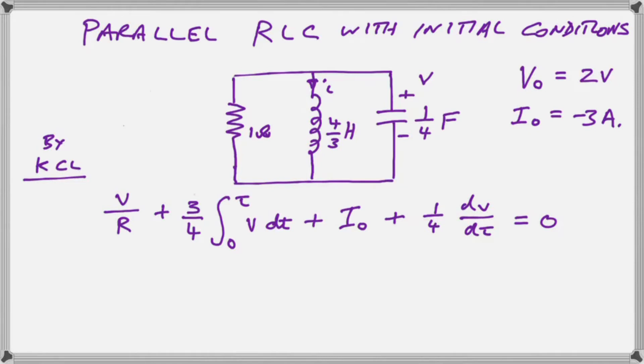So these are currents, these three terms that you see here are currents. That's the current through the resistor. This here is the current through the coil. This here is our initial current, IO, we have to add it in and this here is the current into the capacitor.